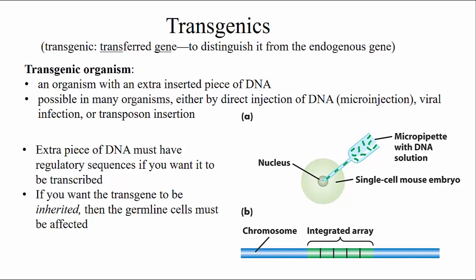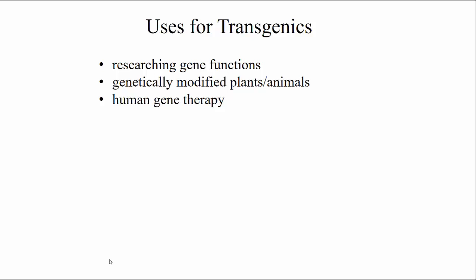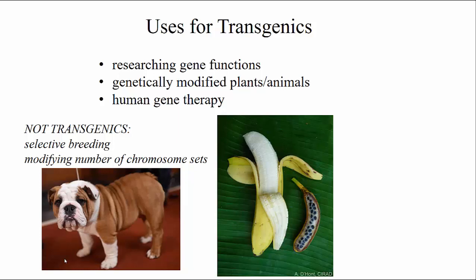I'd like to highlight some things that are not transgenic. Some things involve genetic manipulation nevertheless. For example, humans have selectively bred different crops and different animals — for example, this dog here — to select for various traits. Those would not be considered transgenic, even though they are modifying the genome of that organism, because it's done by breeding, not by inserting an exogenous gene.